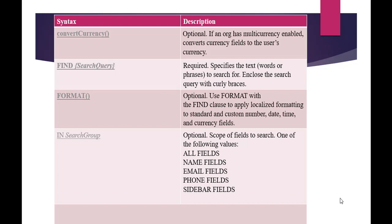Search group is an optional clause that tells you the scope of the fields you want to search. For example, are you only interested in the name field, the phone fields, or the email field? If you're searching for 'info@mytutorialrack.com', you know it's an email, so you specify the email field scope rather than all fields. All fields will look at every field of that object, but specifying email scope only looks at email fields of those records.